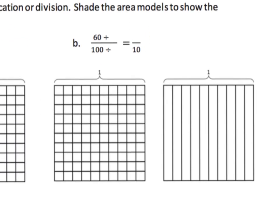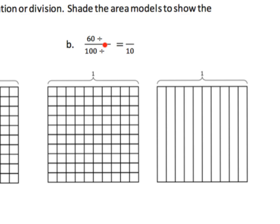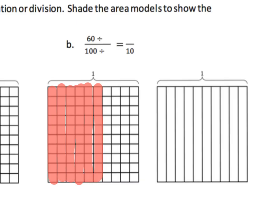Now we can show that same idea in reverse using division as our tool for showing equivalence. First, sixty hundredths: there's ten hundredths, twenty, thirty, forty, fifty, sixty — so there is sixty hundredths. If we divide both the numerator and the denominator by ten: one hundred divided by ten gives us ten, and sixty divided by ten gives us six. So sixty hundredths is equivalent to six tenths.